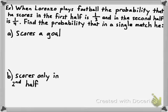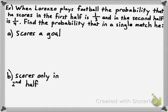When Lorenzo plays football, the probability he scores in the first half is one-third and in the second half is one-fourth. We're going to find a couple of probabilities for what he does in a single match. The probabilities are based on his experience — he scores about one out of every three games in the first half and one out of every four in the second half.